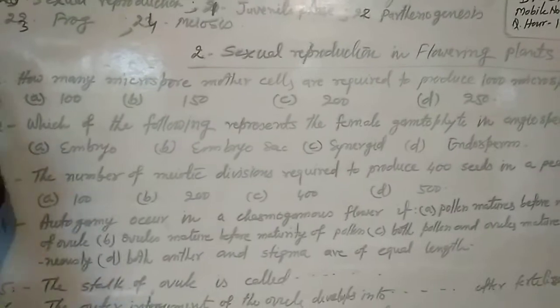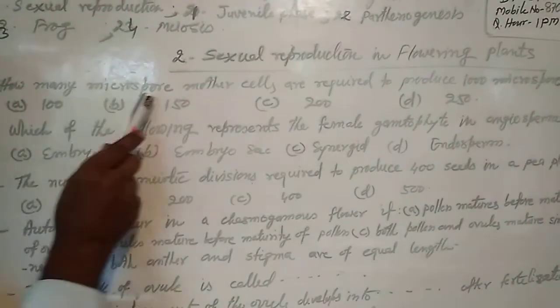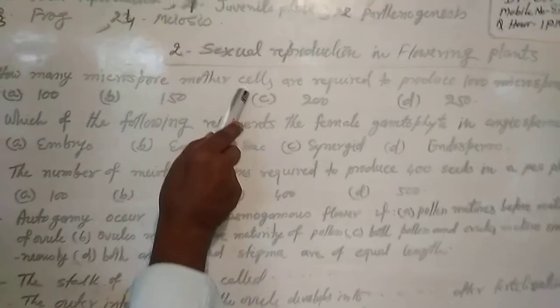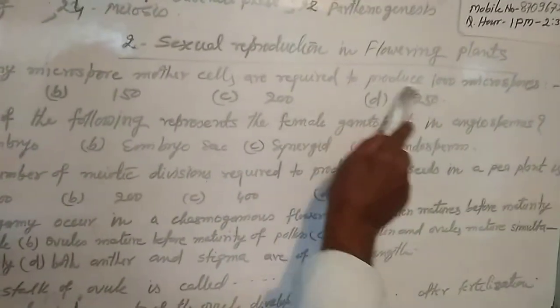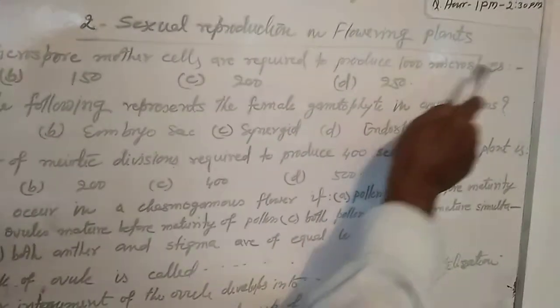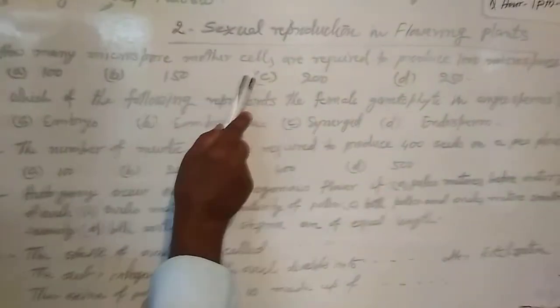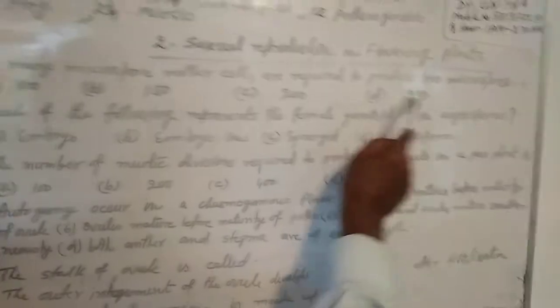Question number 1. How many microspore mother cells are required to produce 1000 microspores? A: 100, B: 150, C: 200, D: 250.